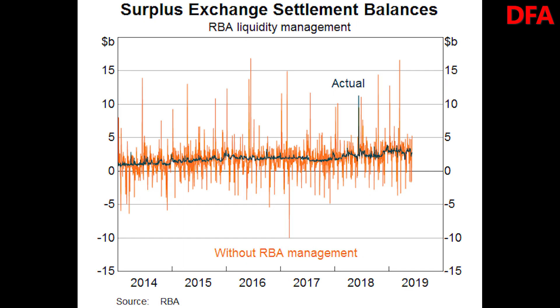Transactions between the government, which banks with the RBA, and the commercial banks would by themselves change the supply of ES balances on a daily basis. ES balances in accounts of commercial banks increase whenever the government spends out of its account at the RBA. Similarly, when the government receives cash into its accounts at the RBA, such as tax payments or debt issuance, ES balances decline.